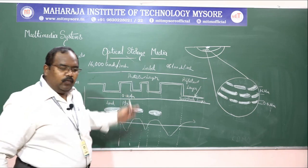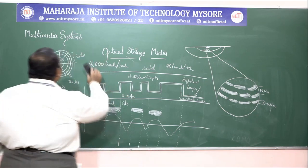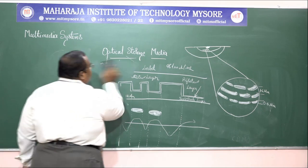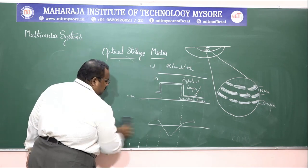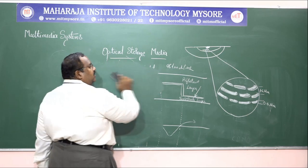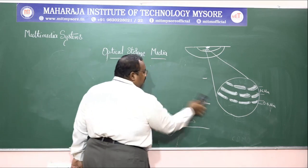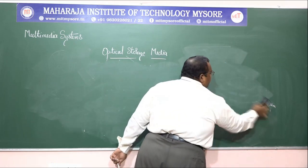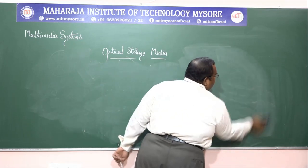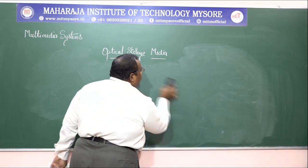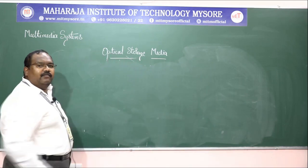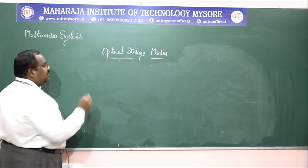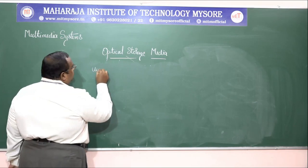Why I am giving the comparison with floppy disks is that the floppy has a storage of only 1.44 MB. When we have a comparison, we are able to assess the storage property — the amount of storage we obtain with respect to optical storage. The next topic we are about to discuss is video disks and WORM.